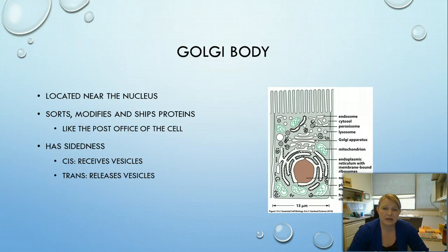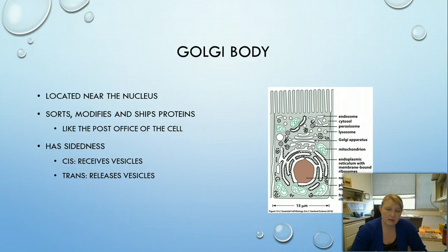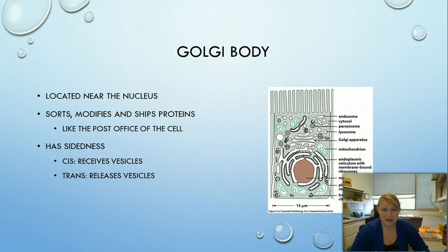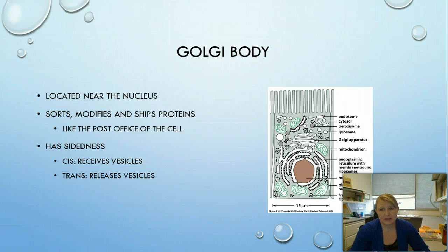The next organelle is the Golgi body. It's located near the nucleus but is not directly attached to it or to the ER — it's separate. The Golgi is responsible for sorting, modifying, and shipping proteins; it's like the post office of the cell, ensuring proteins and other things get to the right place. Importantly, the Golgi has sidedness: the cis side receives vesicles and the trans side releases them, and this is how things transfer through the Golgi.